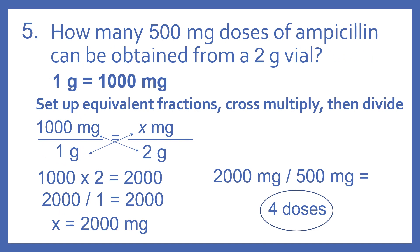To solve this problem we need to know our conversion equivalent with grams and milligrams. So one gram equals 1,000 milligrams. The way I've worked this problem — there are other ways — but I've set up equivalent fractions, cross-multiplied, then divided. So there's 1,000 milligrams per gram, and I'll set that equal to x milligrams per 2 grams. Now we'll just multiply 1,000 times 2 is 2,000, then divided by 1 is 2,000. So x is 2,000 milligrams.